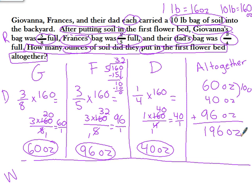How many ounces did they put into the flower bed? They used or put in 196 ounces of soil in the first flower bed.